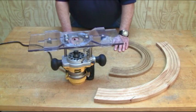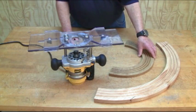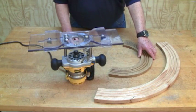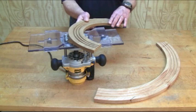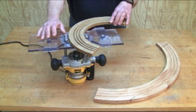One important point to keep in mind. Anytime you're doing curved arches, you want to make sure that the single bearing is riding on the inside of the arc and your double bearing is on the outside.